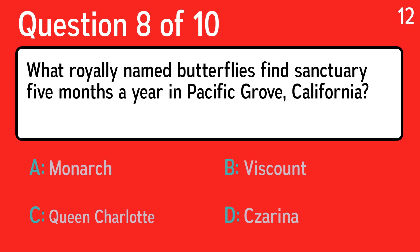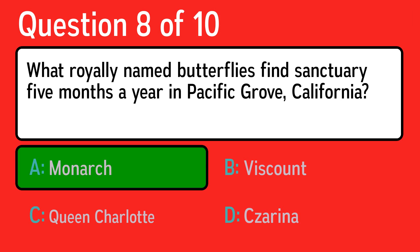Question 8, what royally named butterflies find sanctuary five months a year in Pacific Grove, California? The correct answer is A, monarch.